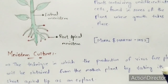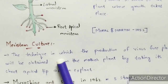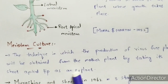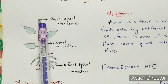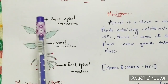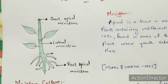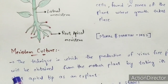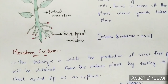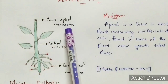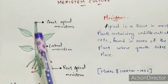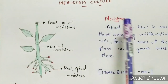The definition of meristem culture: it is the technique in which the production of virus-free plants is obtained from the mother plant by taking its shoot apical tip as an explant. The explant is a part of the mother plant. The shoot apical meristem will be isolated from the mother plant and will undergo culturing process to form a virus-free plant.